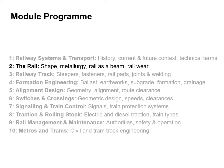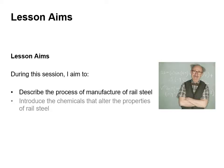In this unit we're going to look at the rail — its shape and geometry, the subject of metallurgy, and how the rails wear. During this unit I aim to describe the process of manufacturing rail steel, introduce the chemicals that alter the properties of rail steel, and introduce the shape and geometry of the rail.